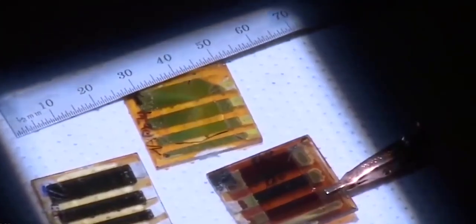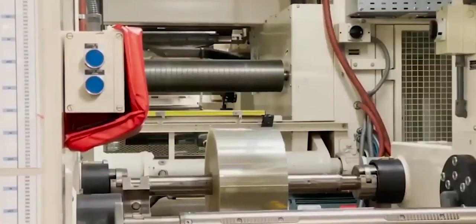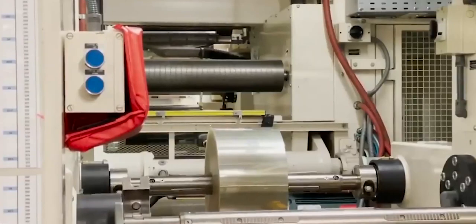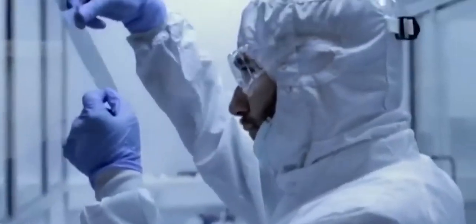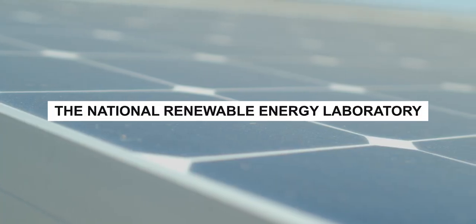Perovskite solar cells have shown remarkable progress in recent years with rapid increases in efficiency from reports of about 3% in 2009 to over 25% today compared to about 25% in single junction perovskite cells. The National Renewable Energy Laboratory.